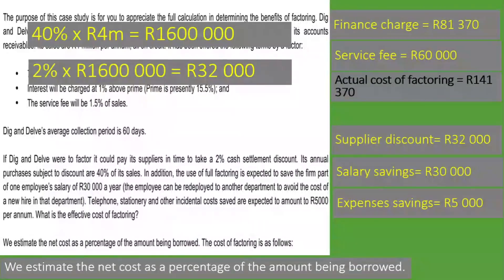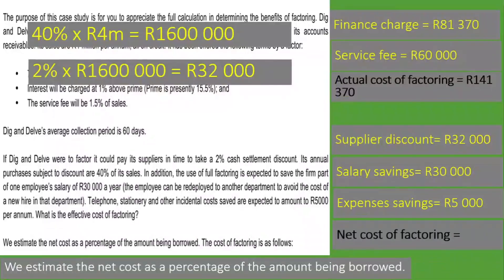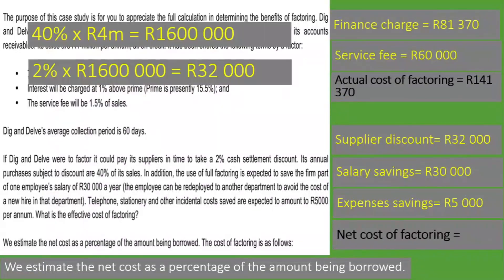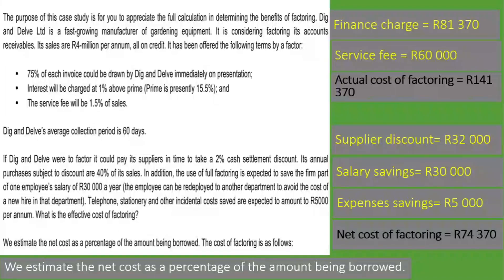Now we can calculate the net cost of factoring, which takes all the savings into account. We take the actual cost of factoring — 141,370 rand — and deduct the savings: minus 32,000 rand supplier discount, minus 30,000 rand salary saving, minus 5,000 rand expense saving. This gives a net cost of factoring of 74,370 rand.